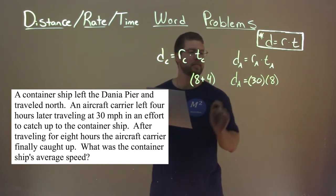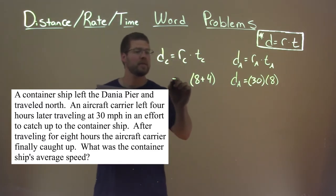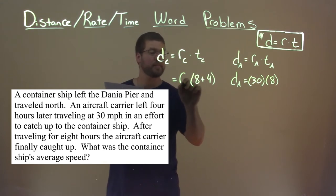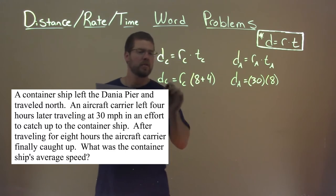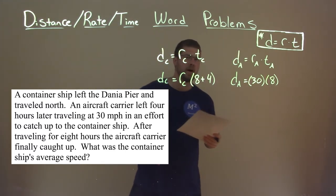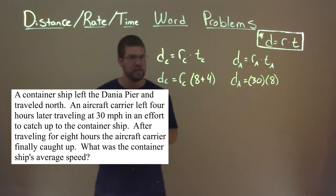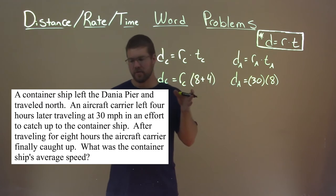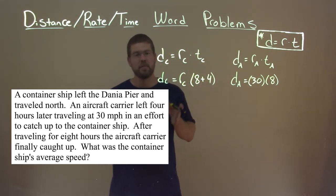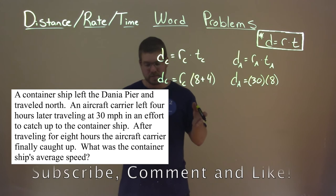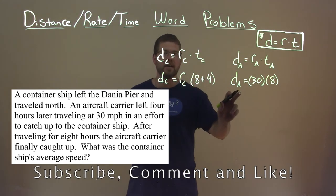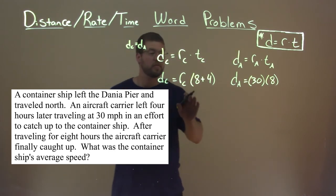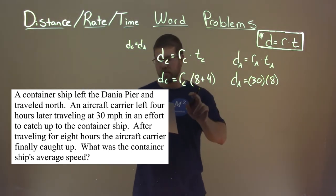That's equal to the distance here. And what we want to find is the rate of the container ship. Notice here, D sub C and D sub A are referring to actually the same distance. All this information came to us at a point where they met, so they must have traveled the same distance. So D sub C and D sub A are equal to each other, and by doing that we can set these two equations equal to each other.